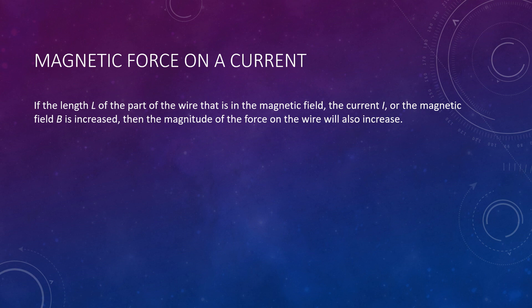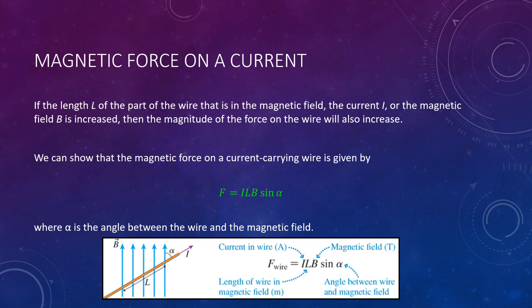With this in mind, we can come up with an equation for the force on a wire. That equation has a somewhat similar form to the one for the force on charges. Here, force is equal to ILB times sine of alpha. You can see the direct relationship: more current means more force, more length of the wire means more force, and a greater magnetic field strength also means more force. We also have the sine of alpha term, where alpha is the angle between the wire and the magnetic field, as you can see in the image below.